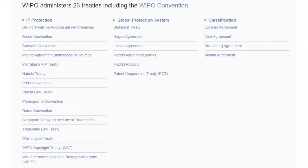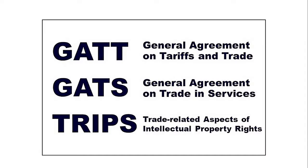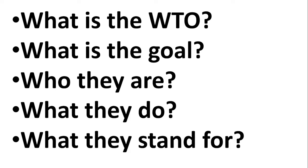WIPO also provides registration services for international applications and commissions and publishes studies on emerging issues. There are a total of 26 IP agreements — WIPO administers 24 of them; one is governed by UNESCO and the other is governed by the World Trade Organization, which is the TRIPS Act. The three key WTO agreements are: the General Agreement on Tariffs and Trade, the General Agreement on Trade in Services, and the Trade Related Aspects of Intellectual Property Rights (TRIPS).